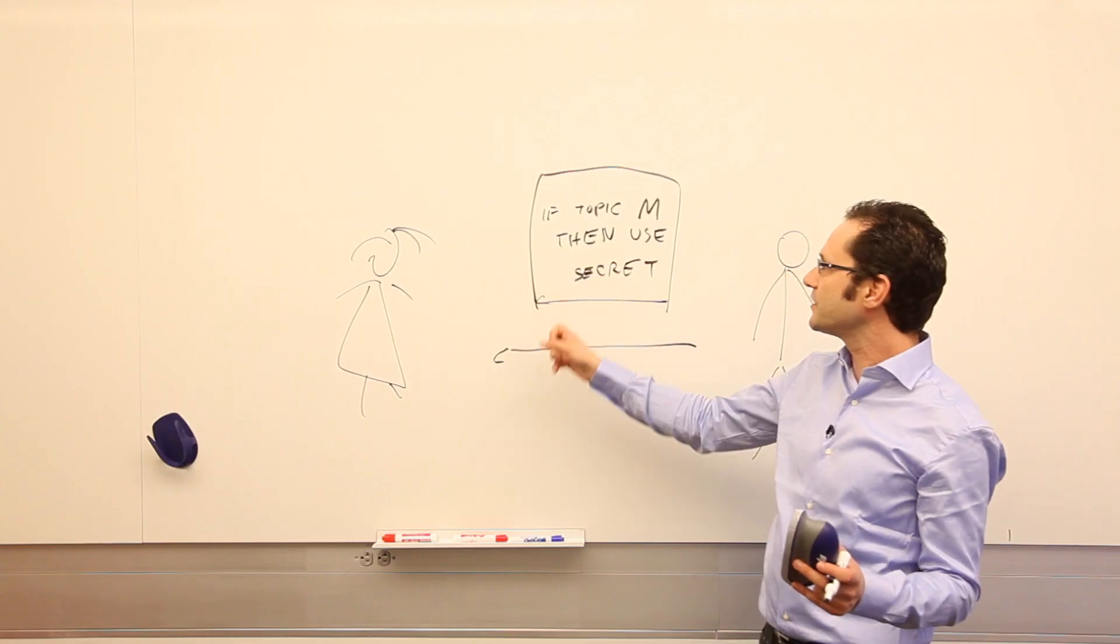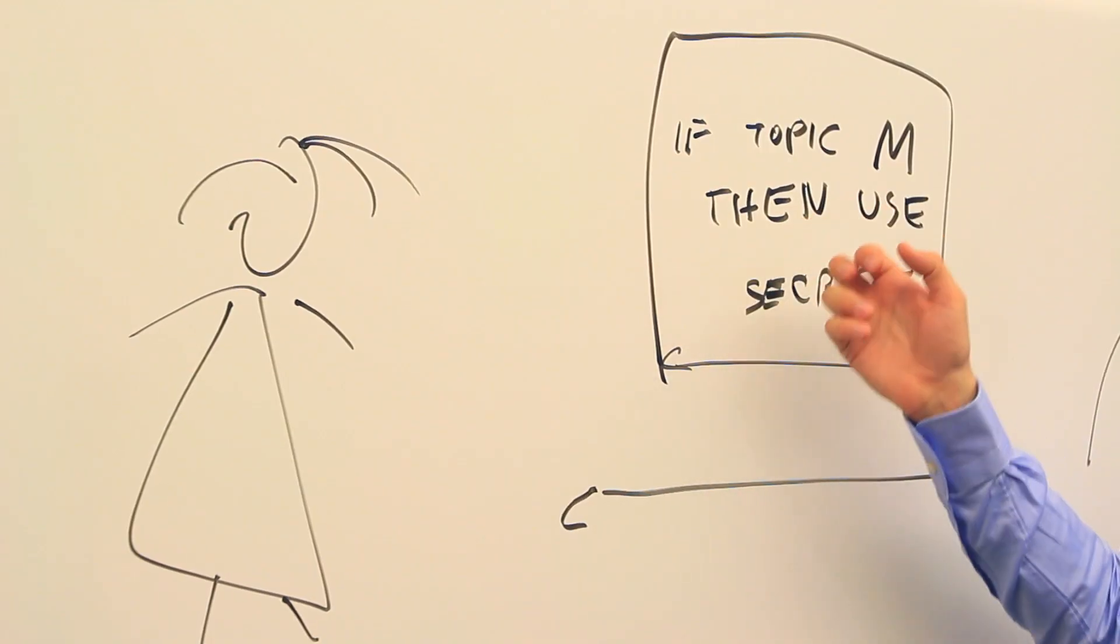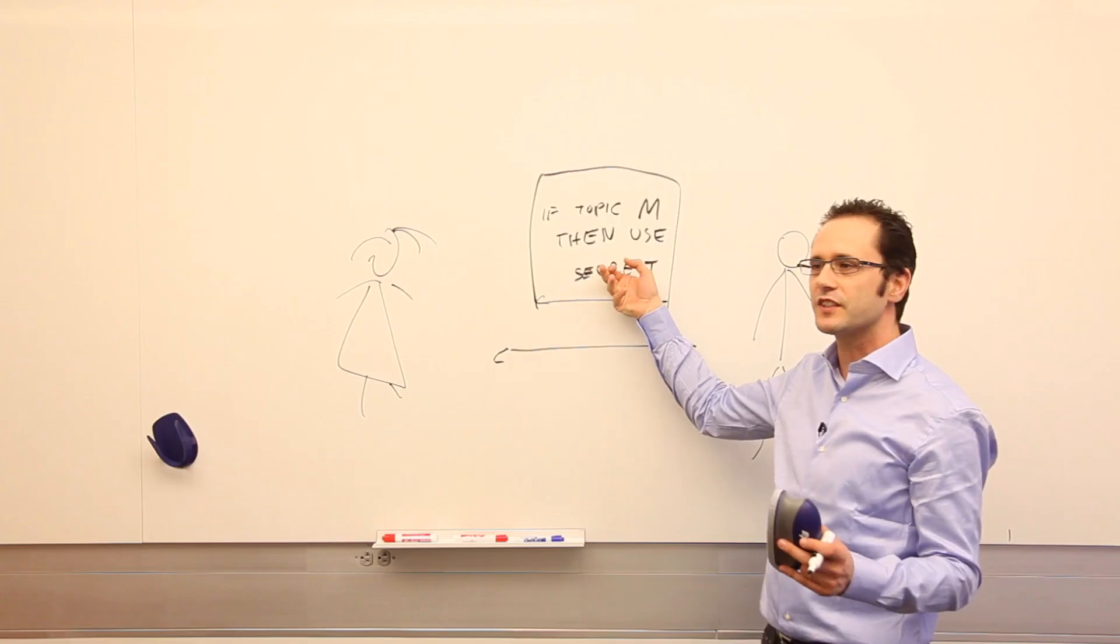Now, the problem is that if she actually goes and reads the code of this program, she will learn my secret key. It's just written there.